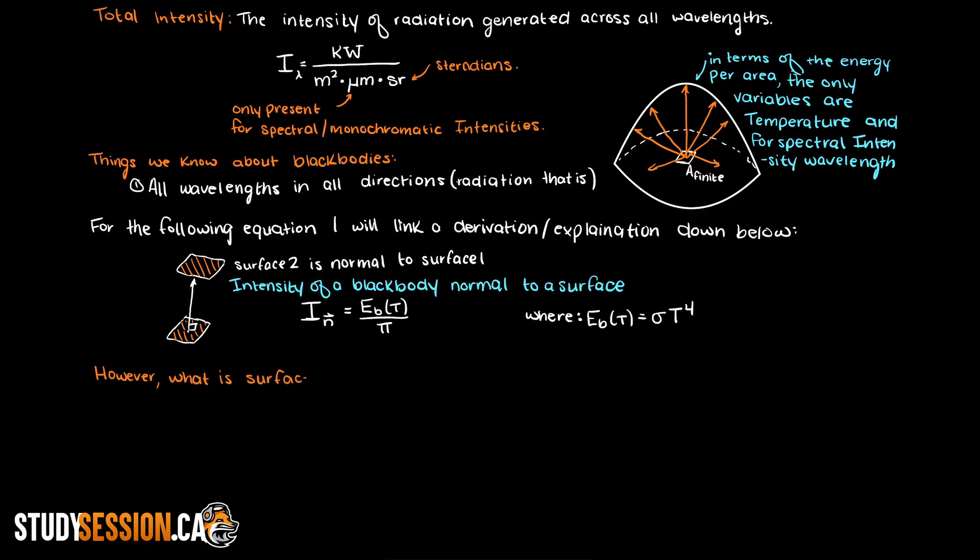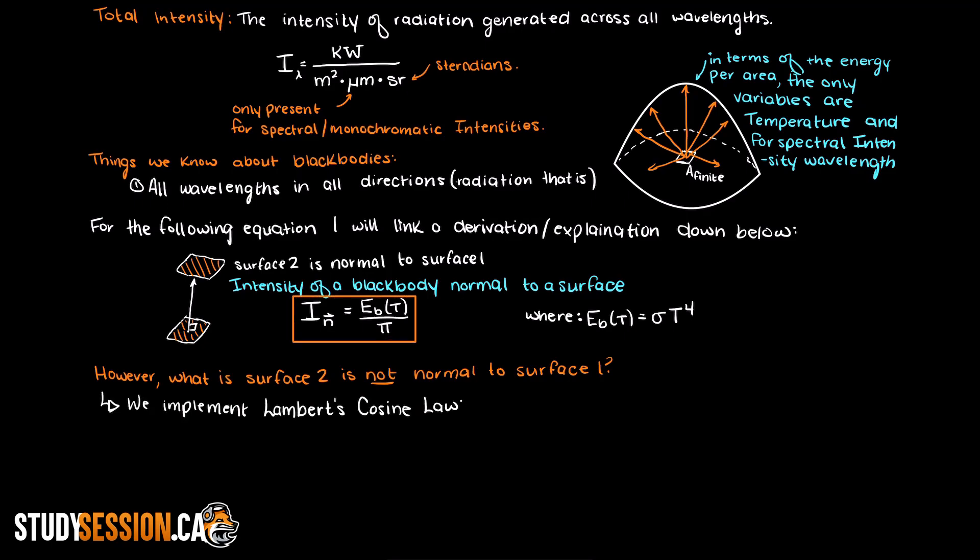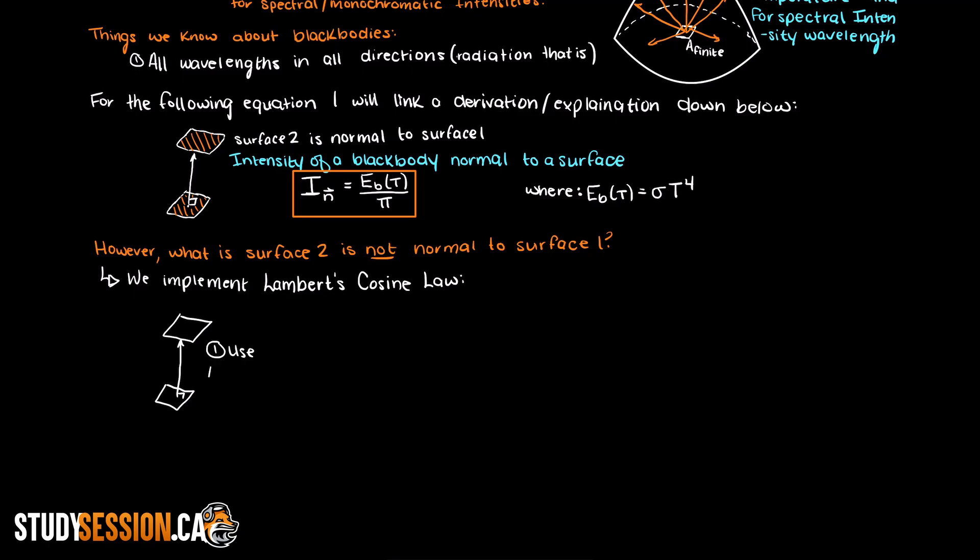However, what if our area of interest is not simply normal to the radiation surface? Well, then we need to implement what is called Lambert's cosine law. So this diagram here should make this more clear.